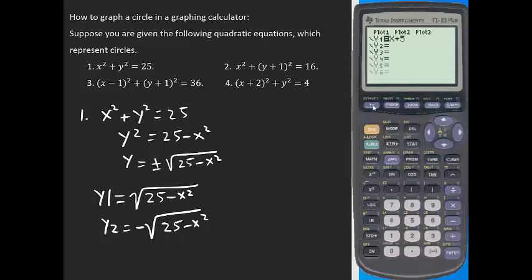In the graphing calculator, go to graphing mode and clear everything. For y1, we take the upper half: go to second, square root, 25 minus x squared. For y2, be careful — you need to use the negative sign, not the minus sign. Then go to second, square root, and enter 25 minus x squared, then close your parentheses.